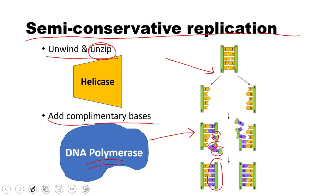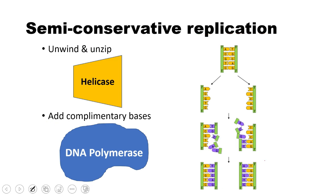That's it. Really simple. Complementary base pairing. And now we have two strands of DNA identical to the one we started with. And so that's the replication side of things.